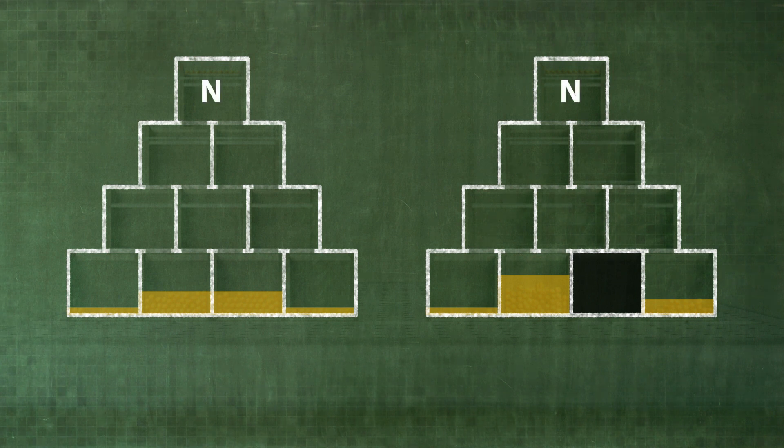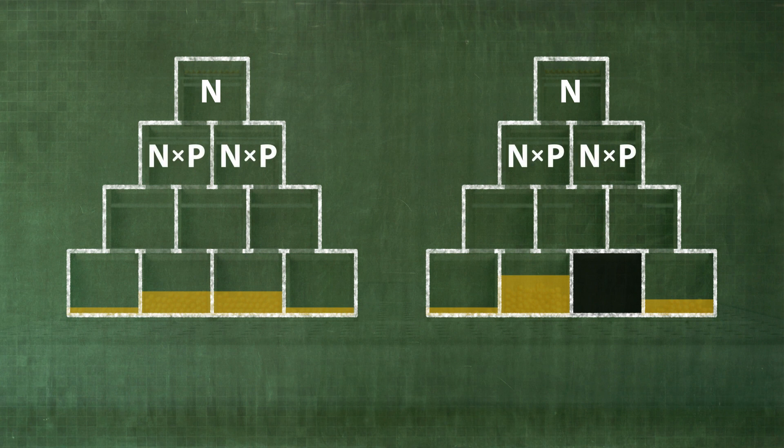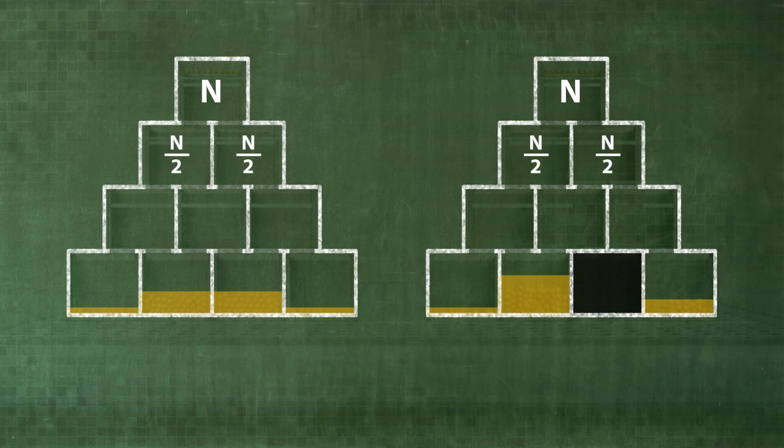N is the large number of balls dropping through the pyramid. If p is the probability for an individual ball to reach this box, n times p balls will land in each box.